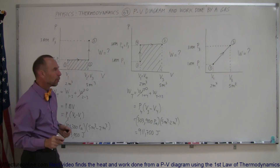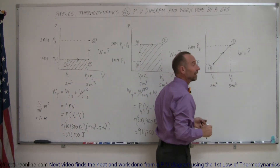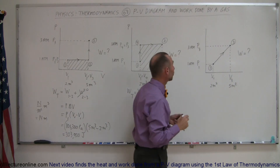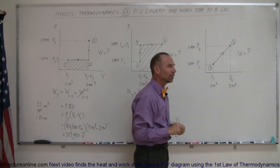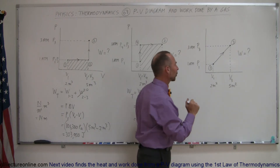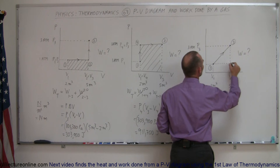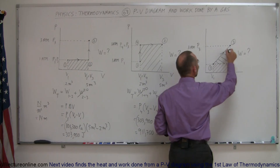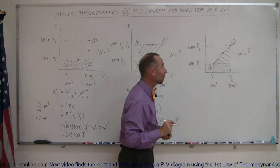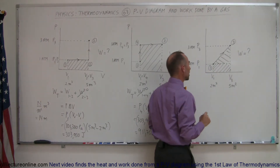When we go directly from state one to state three along a diagonal line, the pressure does not stay the same, so we cannot use the simple equation work equals pressure times change in volume. But we know that work done always equals the area underneath the curve. We can find the area of the rectangle below the diagonal line and the area of the triangle above it, then add them together to find the total work done.